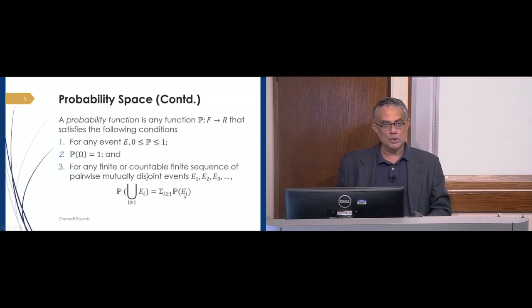So what do I mean by that? If you take some event E2, and it has nothing in common with E1, it's completely non-overlapping. Similarly, E3 is non-overlapping with E1 and E2, and so on. So if you take any two at a time, the event spaces don't overlap. Then the probability of the sum of the events is the sum of the probability of the events.